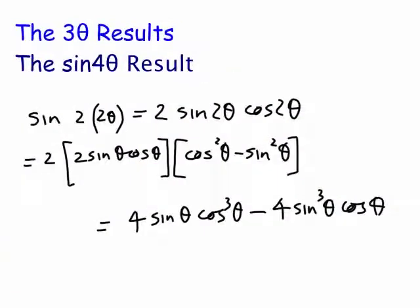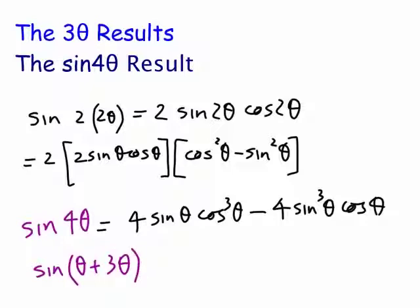For 4-theta: how do we do it? I've done it a couple of ways and you still get the same result. You can write sin(4θ) as sin(2 × 2θ), substituting 2θ into the 2-theta results and expanding it out. You could also write it as sin(θ + 3θ) and use the 3-theta results — but you end up getting the same result either way.